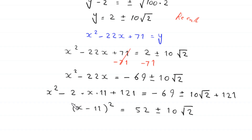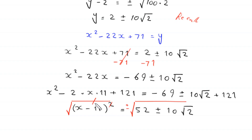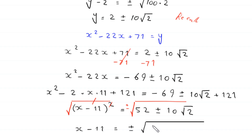Recalling that we supposed x squared minus 22x plus 71 equals y, this becomes x squared minus 22x plus 71 equals 2 plus or minus 10 root 2. Subtracting 71 from both sides: x squared minus 22x equals negative 69 plus or minus 10 root 2.